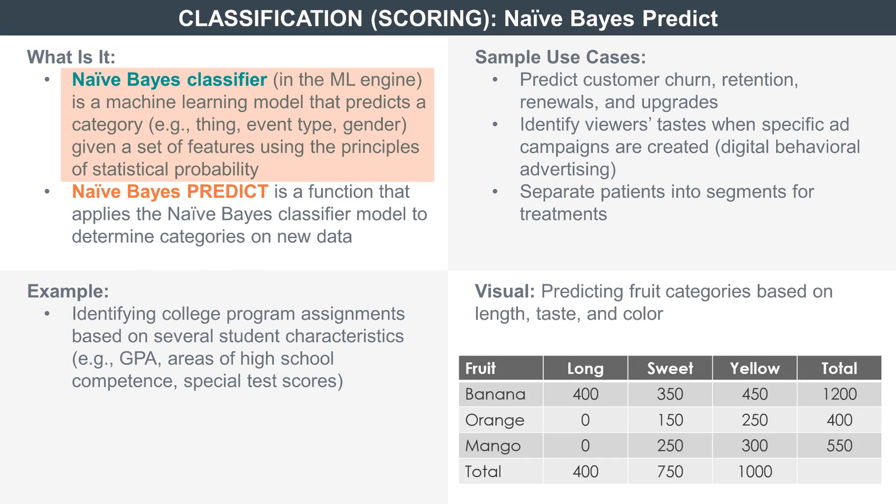A Naive Bayes classifier is a probability function used to classify data into distinct buckets. But unlike other classifiers, Naive Bayes assumes when doing classifications that the features making up something — for instance, an object — are independent. For example, a banana is yellow, long, and sweet, and it's a fruit.